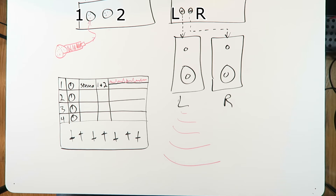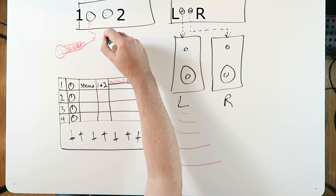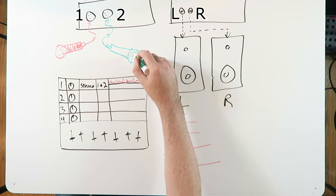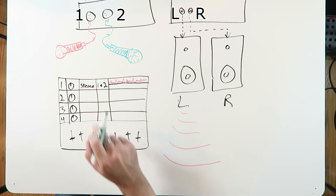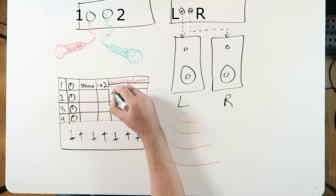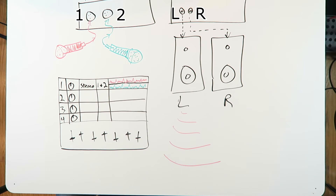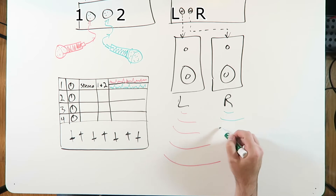Now let's say we plug in a second microphone and plug it into input number two. If we record both of these at the same time, input number one is our left-hand side and input number two is our right-hand side. So we'll actually get some information on the other side of this track when we record it. When we play this back, all we're going to hear is input number two out of the right-hand side.